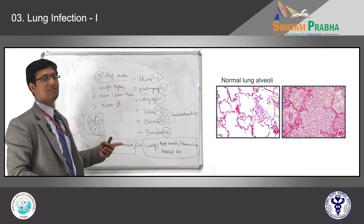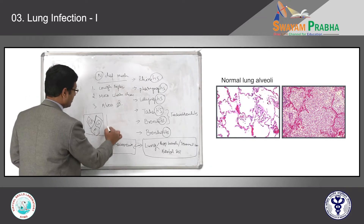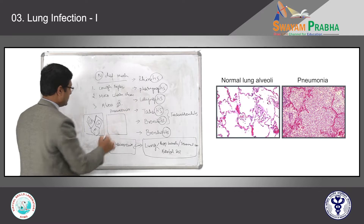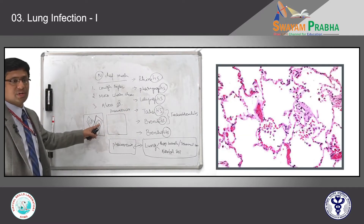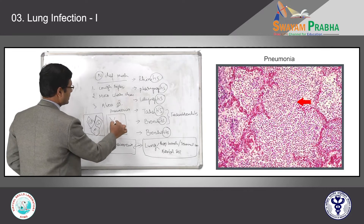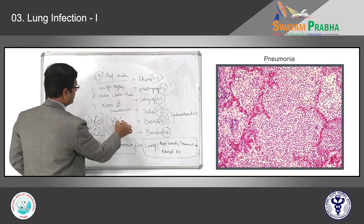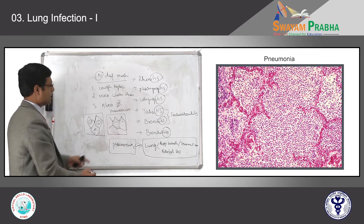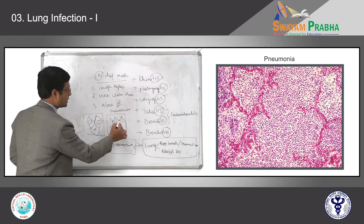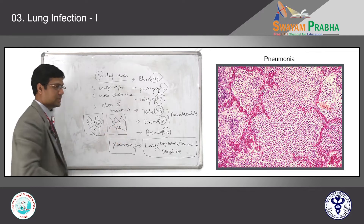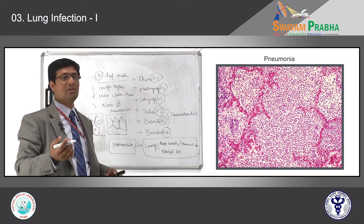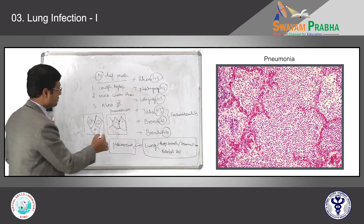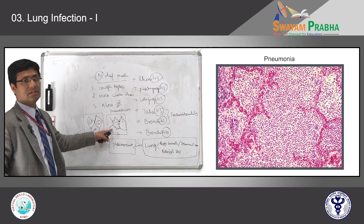When this part is infected — inflammation of the alveoli or lung parenchyma — we call it pneumonia, where these empty alveolar spaces are filled up with inflammatory cells. All the alveolar lumens are filled with inflammatory cells, and you can see congestion of the inter-alveolar septal capillaries. Congestion of the septal capillaries and presence of inflammatory cells in the alveolar lumen is pneumonia.